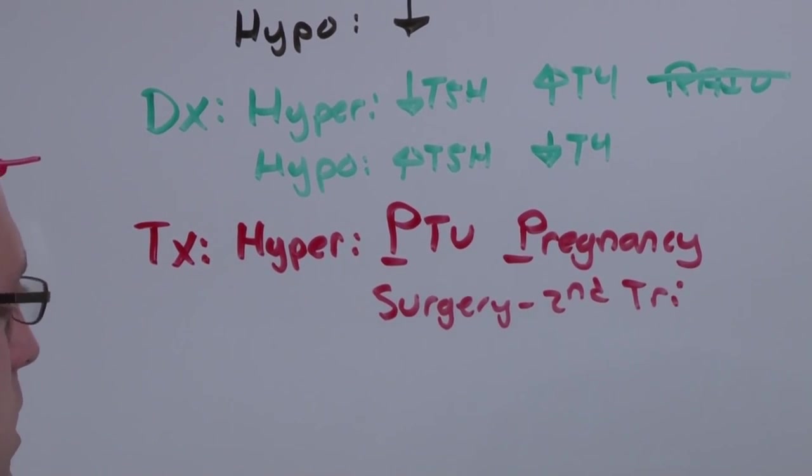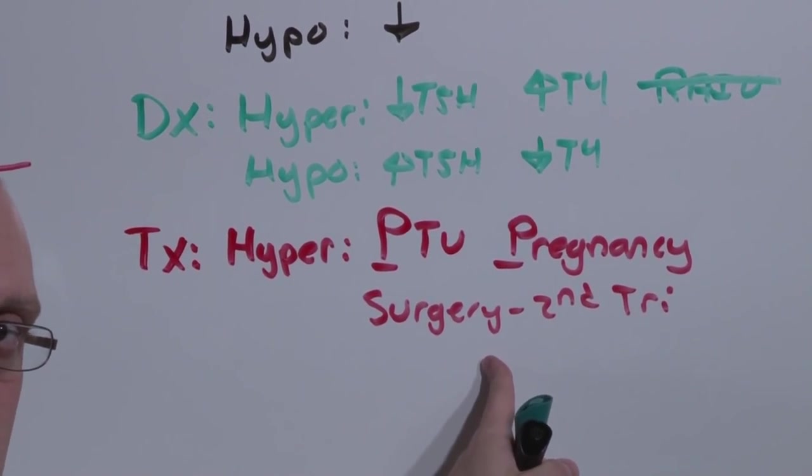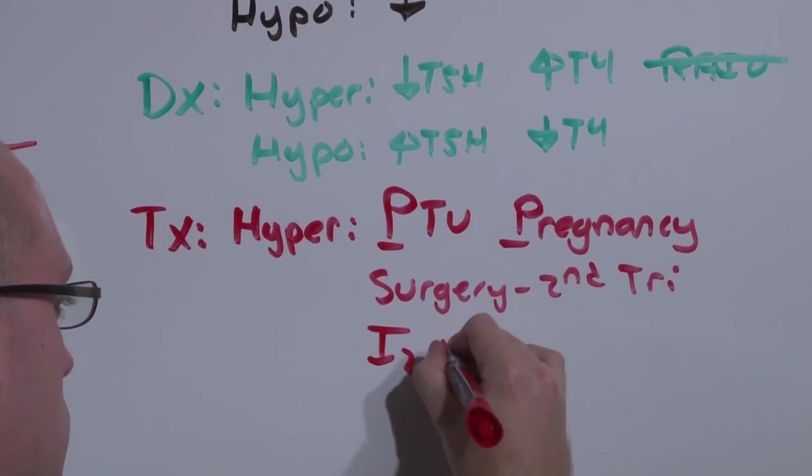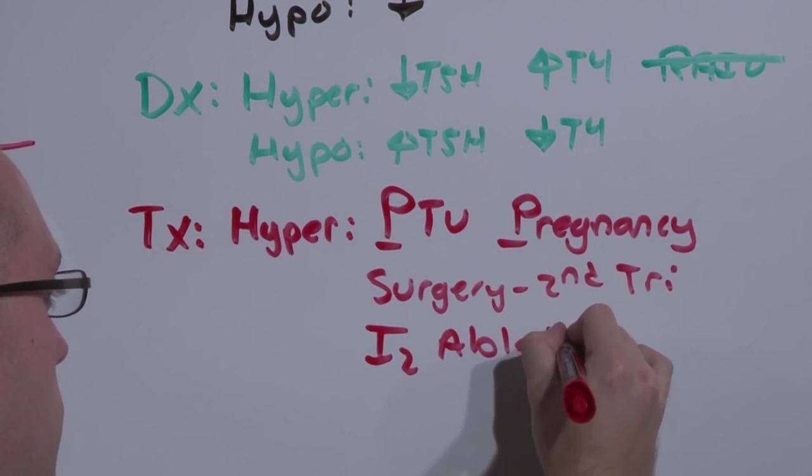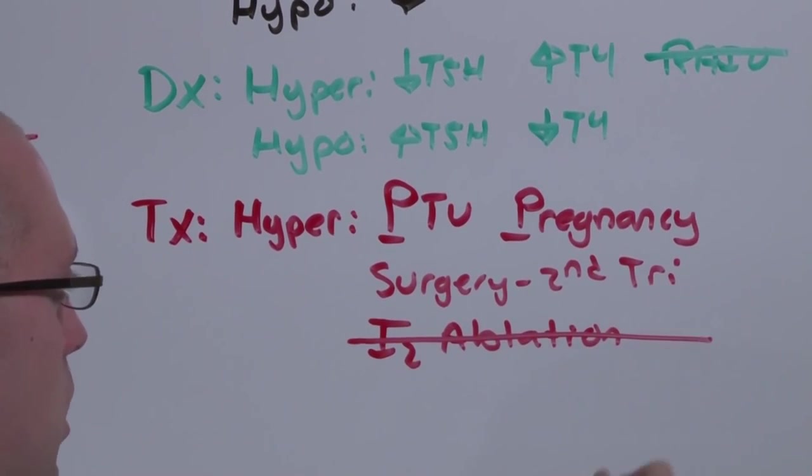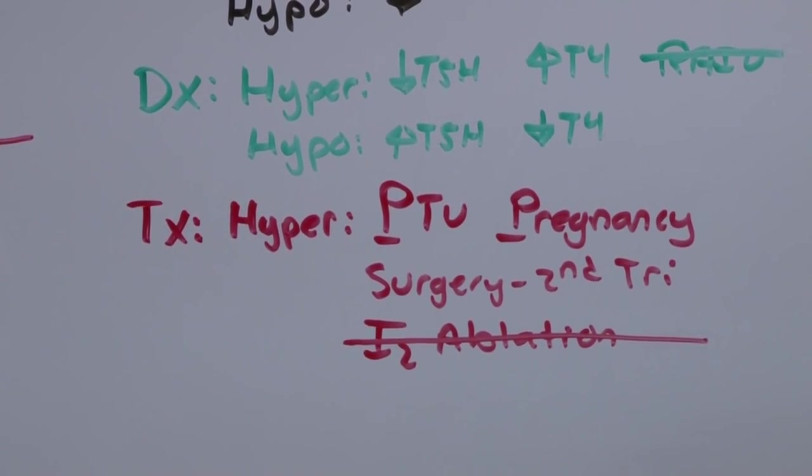That is, after the fetus is developed, but before mom's belly is so big it compromises her respiratory status. And most of hypothyroidism responds to iodine ablation. But if you've got a fetus who also has a thyroid, you do not want to ablate that thyroid also. So you cannot use iodine ablation in a pregnant female.